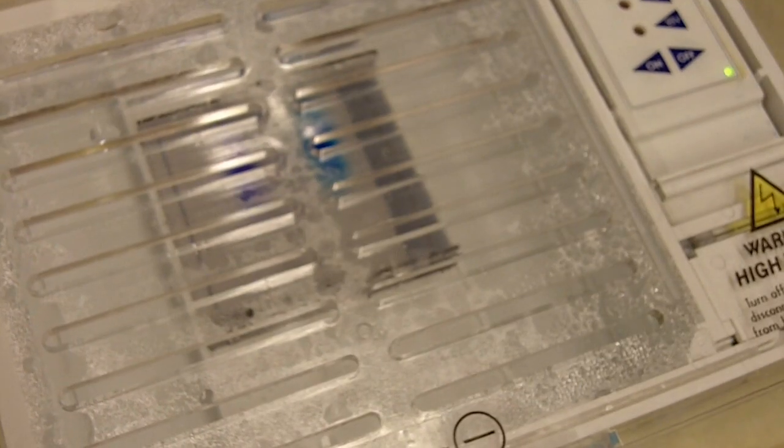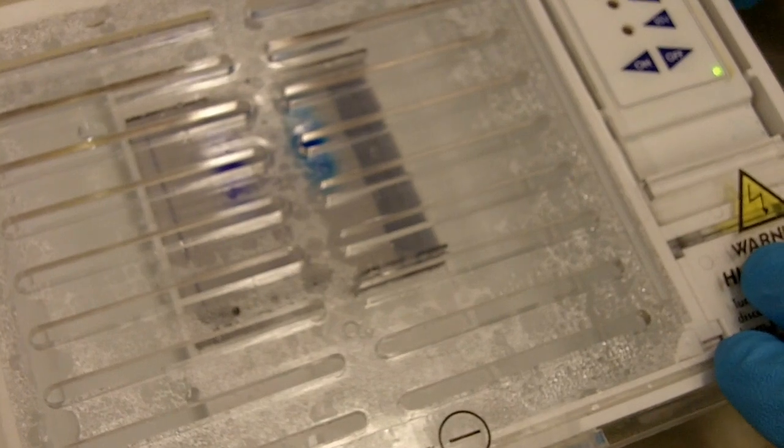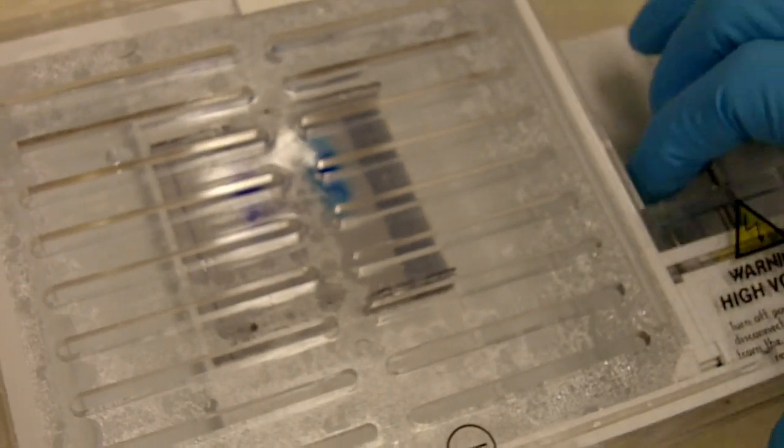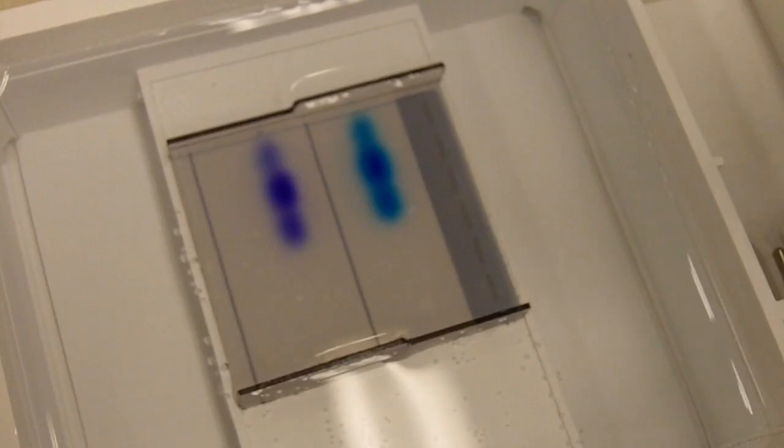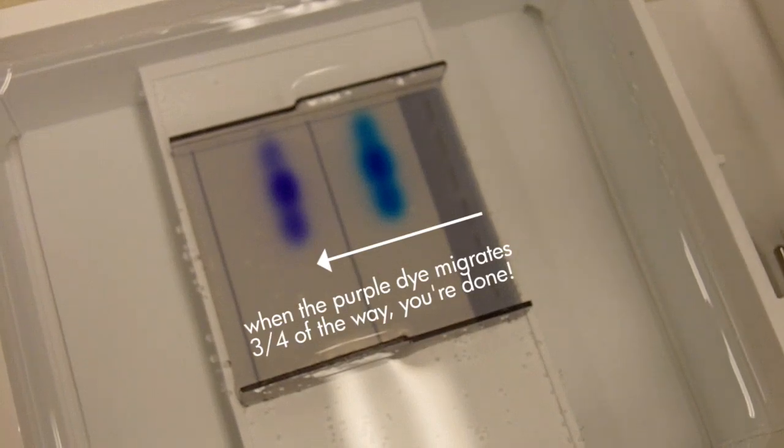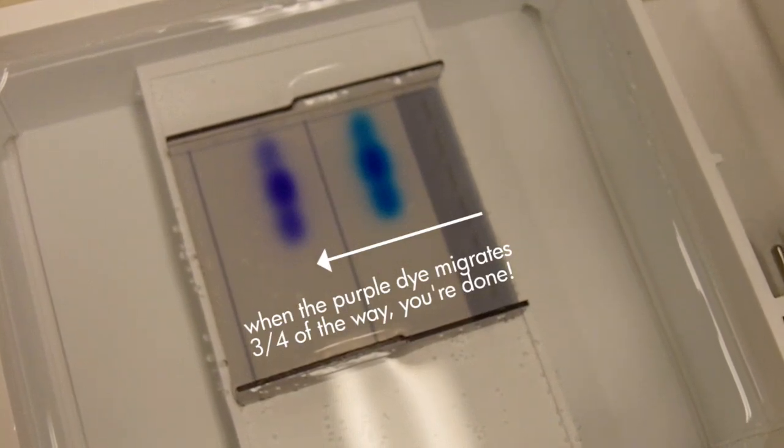Now the gel has finished running, we can unplug the power supply and take off the lid. How you can tell the gel is finished or not is that you look at how far the dye has migrated. After that you can just stain the gel, then you're done. See you guys next time.